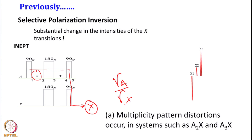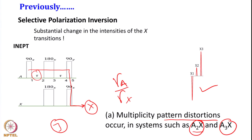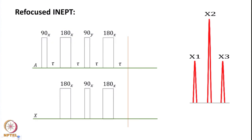We saw that INAPT has problems because it depends upon the J value. This J-dependency causes distortion in the peak pattern depending on how many protons are coupled — for A2X and A3X systems, different peak patterns arise, and some peaks can be positive, some negative. To get rid of this, we looked at adding a spin echo sequence to INAPT, called refocused INAPT, which removes the sign difference in the multiplet peaks so all peaks become positive.